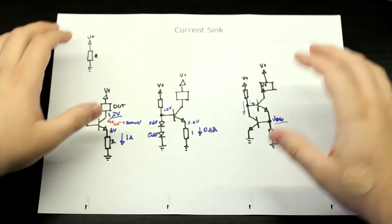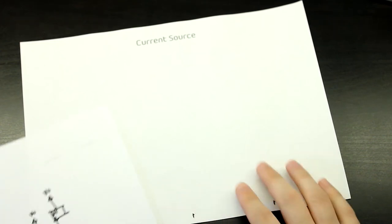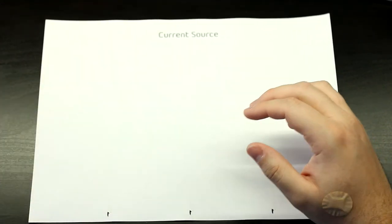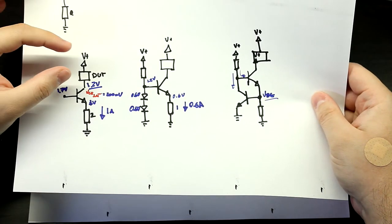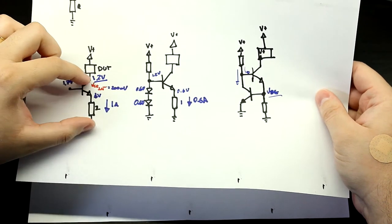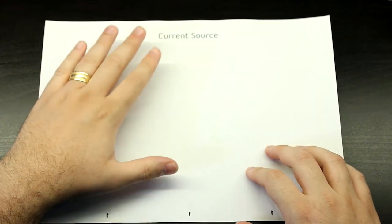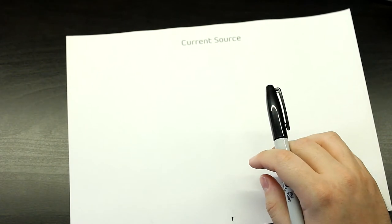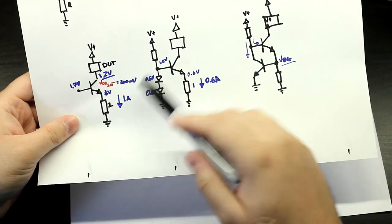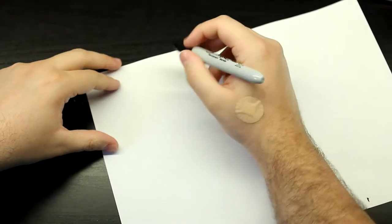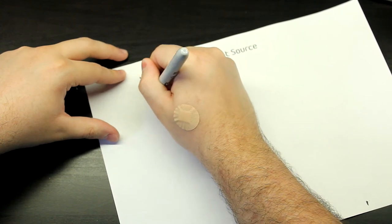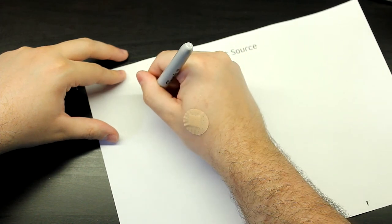Now that we've seen current sinks, let's go to the opposite side — current sources. The principle of operation is exactly the same, but reversed. In the previous example, we had a supply or whatever here, and we were sinking a constant amount of current. Now we want to supply a constant amount of current, no matter the load that we have. Let's start with the same example as before and go through the same steps.